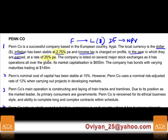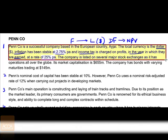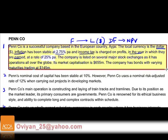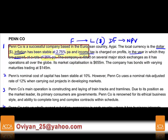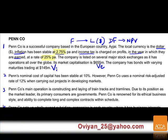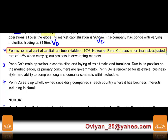The company is listed on a major stock exchange and has operations across the globe. Market capitalisation is 655, and the company has bonds of varying maturity trading at 145. So 655 is the value of equity and 145 is the value of debt.